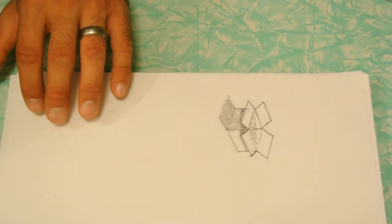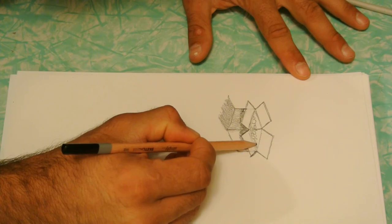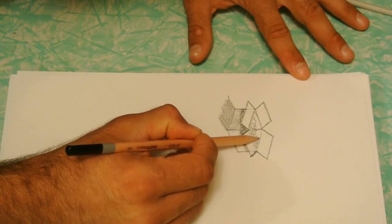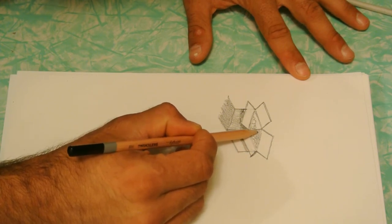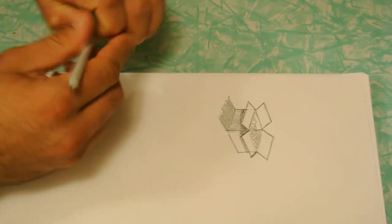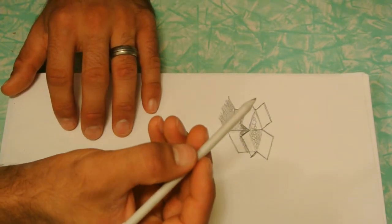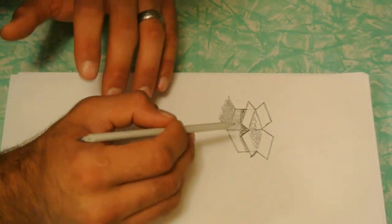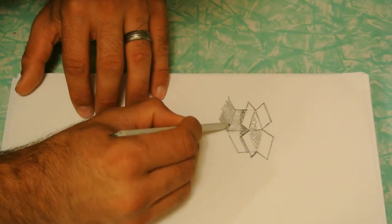Once again, you want to shade this back side in as well. Now you're going to go back with a blending tool or your finger. Blend it in real good.